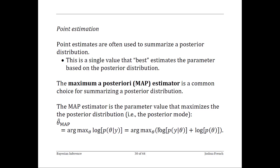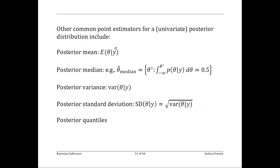On the log scale, this is the log of the data distribution plus the log of the prior distribution. Other common point estimators of the posterior distribution are the posterior mean, the posterior median, the posterior variance, the posterior standard deviation, or various posterior quantiles.